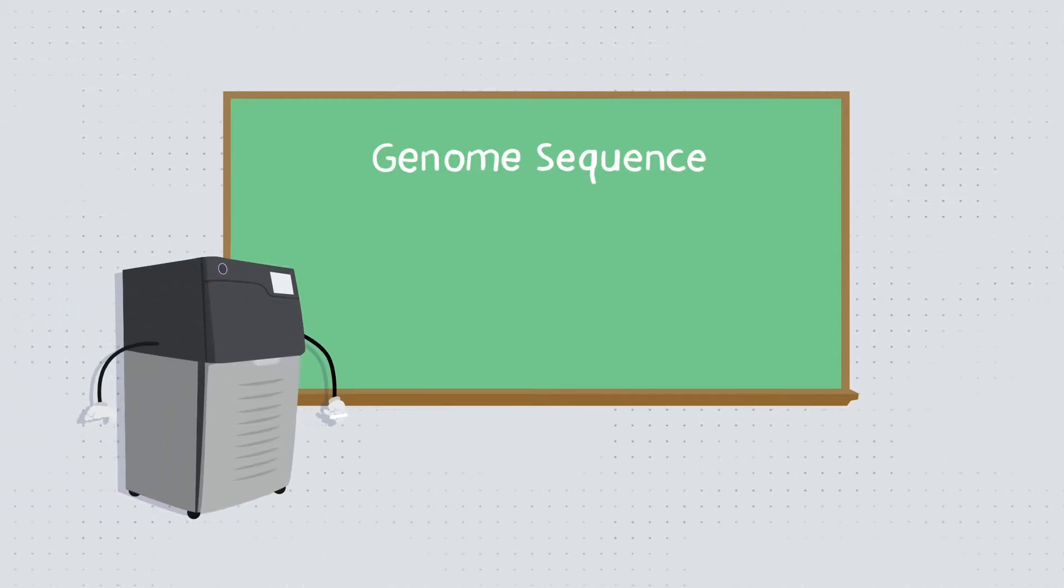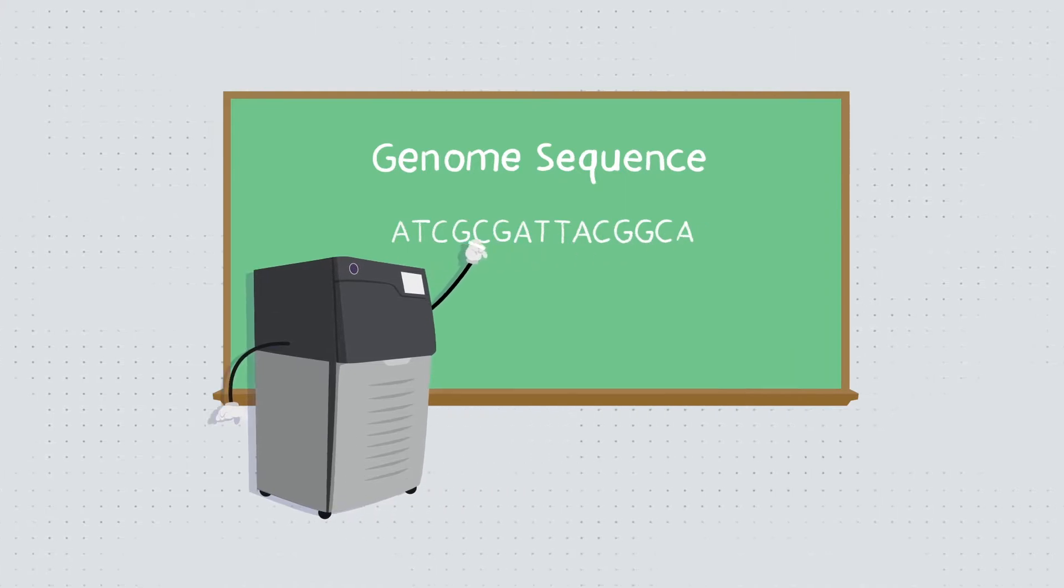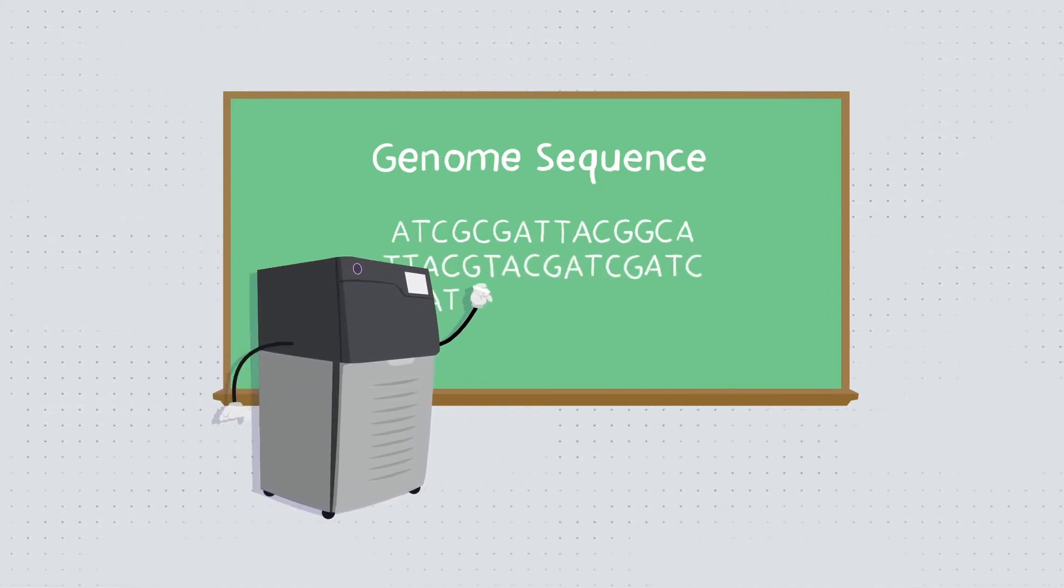Ever since the first DNA sequencer started jotting down the A, T, C, and G base pairs of DNA, we've been identifying variations, places where two genomes differ.